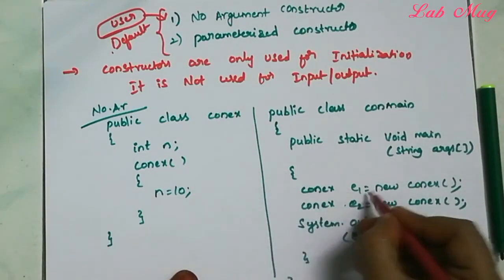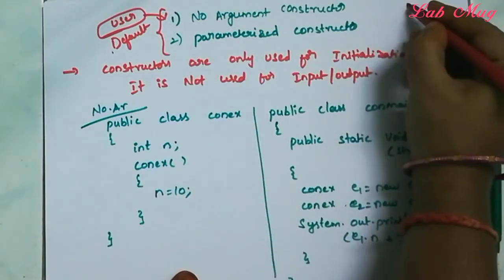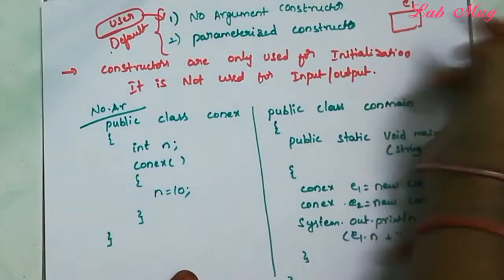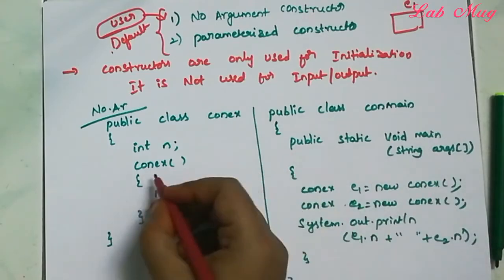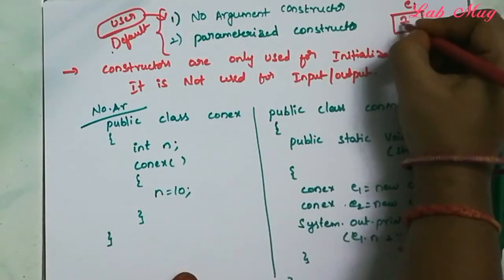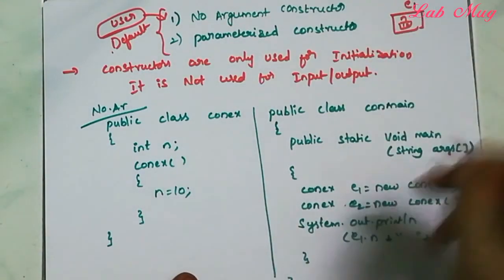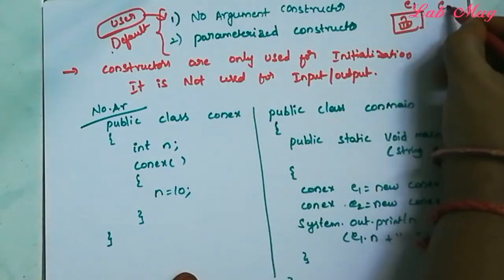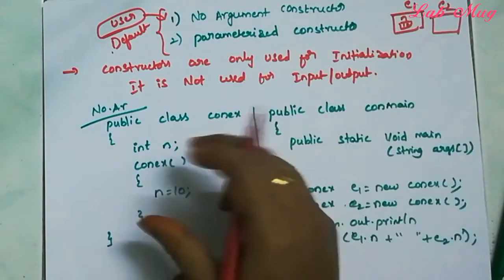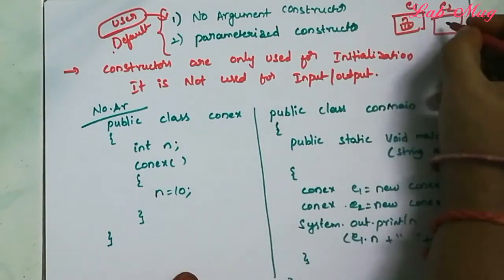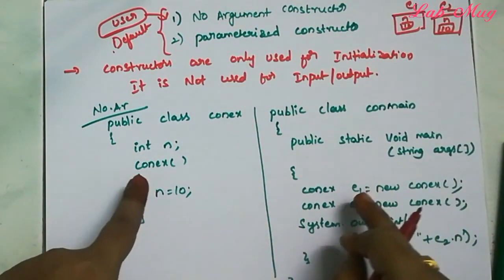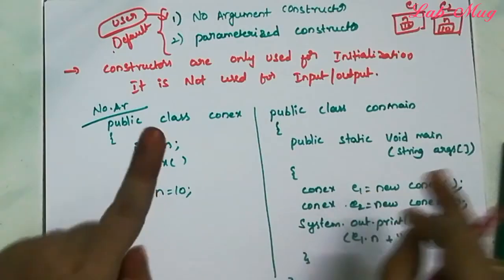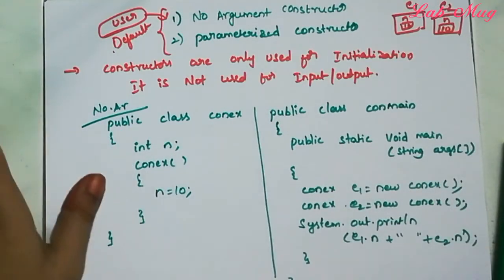When we create object e1, members and space are allocated. The variable n gets the value 10. When we create object e2 from the same class, members and space are allocated again, and the value 10 is stored. So e1.n is 10 and e2.n is 10, and we can access them.